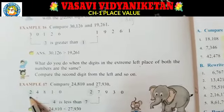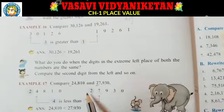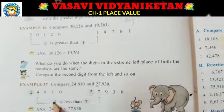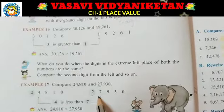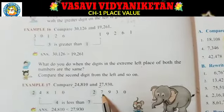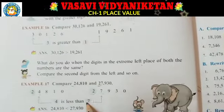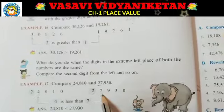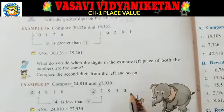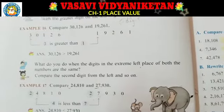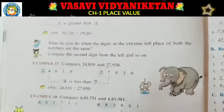Starting from the left side, the first digit is the same. So we compare the second digit from the left. Here 4 is there and here 7 is there. So 4 is less than 7. Therefore 24,810 is less than 27,930, so 24,810 is the smallest number.